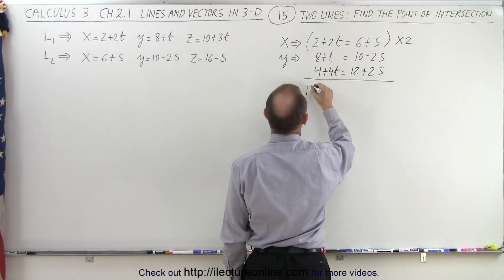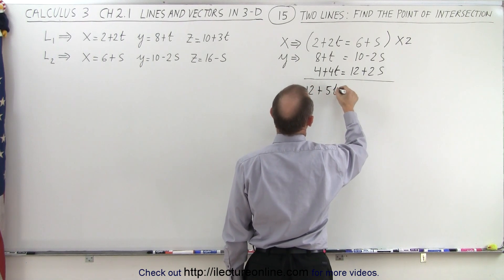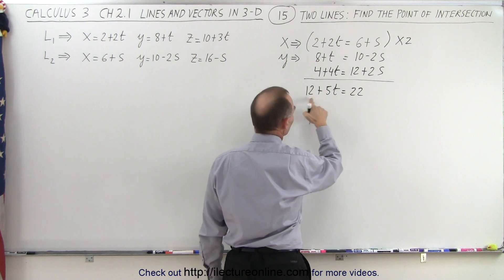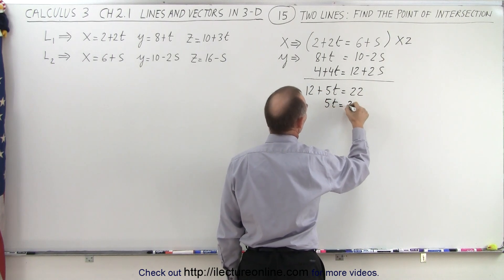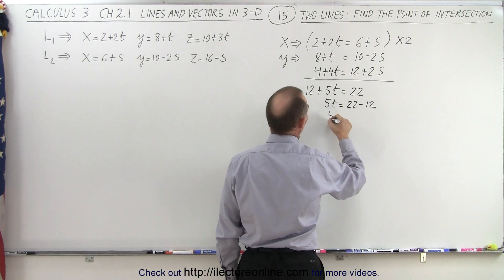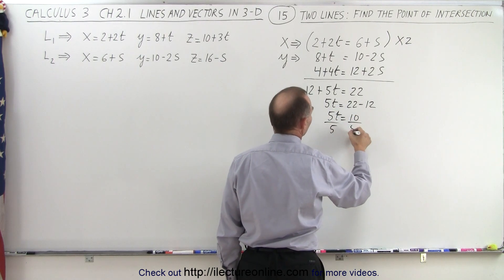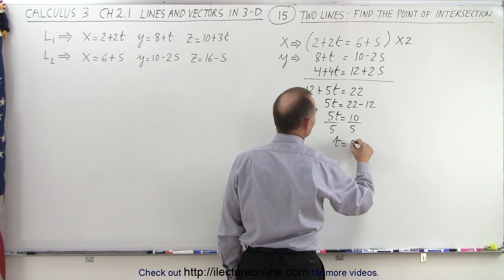So we end up with 12 plus 5t is equal to 22 plus 0. Moving the 12 across, we get 5t is equal to 22 minus 12, 5t is equal to 10, divide both sides by 5, and we get t is equal to 2.